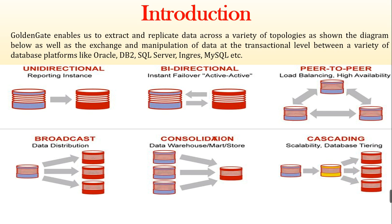Here is the diagram showing the different topologies: unidirectional — reporting instance, bidirectional instance, failover, active-active, peer-to-peer, load balancing, high availability and broadcast, data distribution, consolidation, data warehouse, cascading, database tiering, and more. In my next video we are going to see the unidirectional reporting instance only — that is one-way replication.